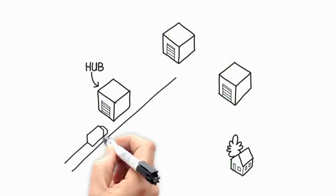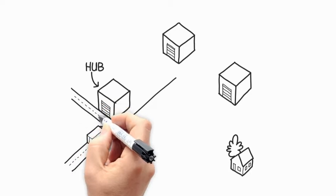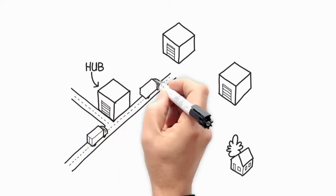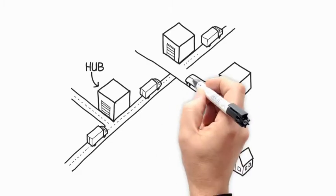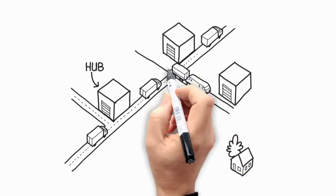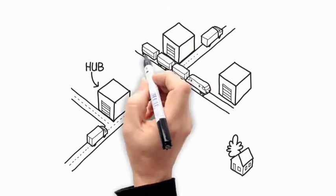Products moving over this open and interconnected network belong to many different parties, who have in common that they are users of the physical Internet. In this way, the physical Internet is enabling full horizontal and vertical collaboration.